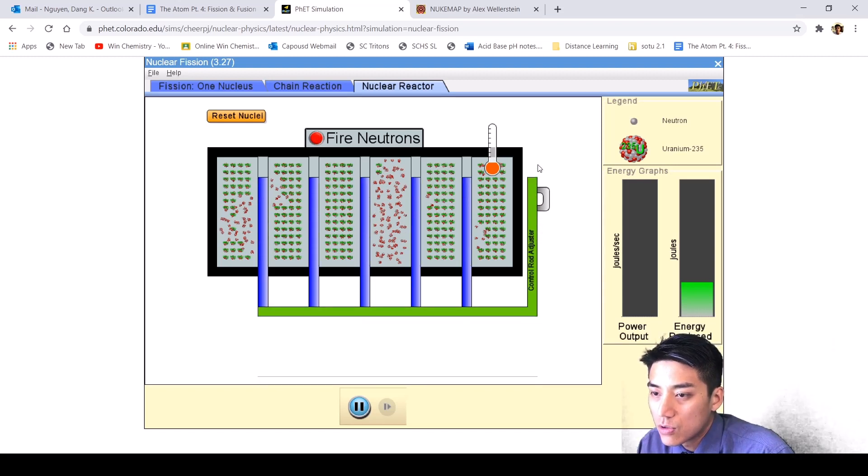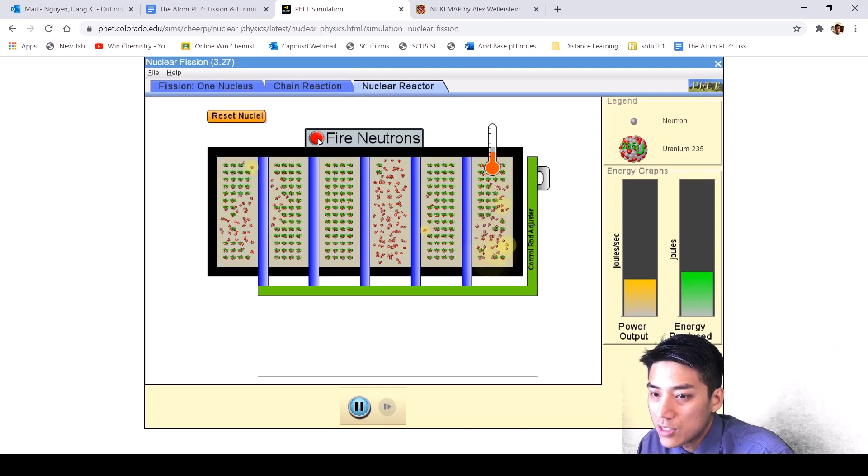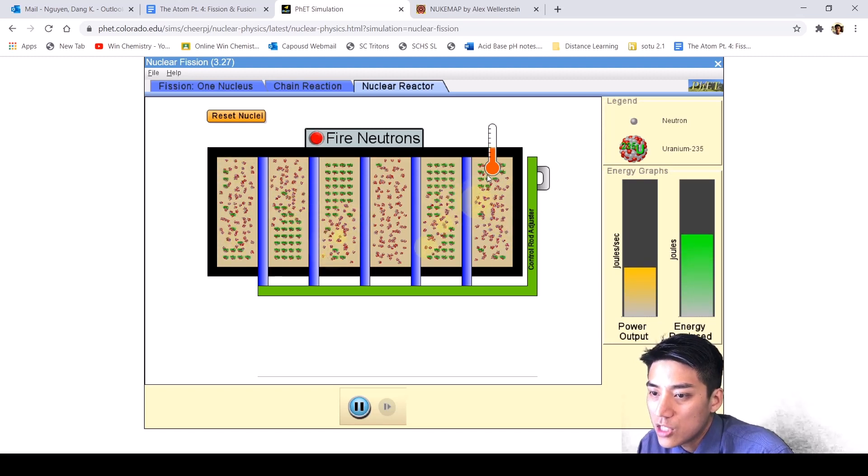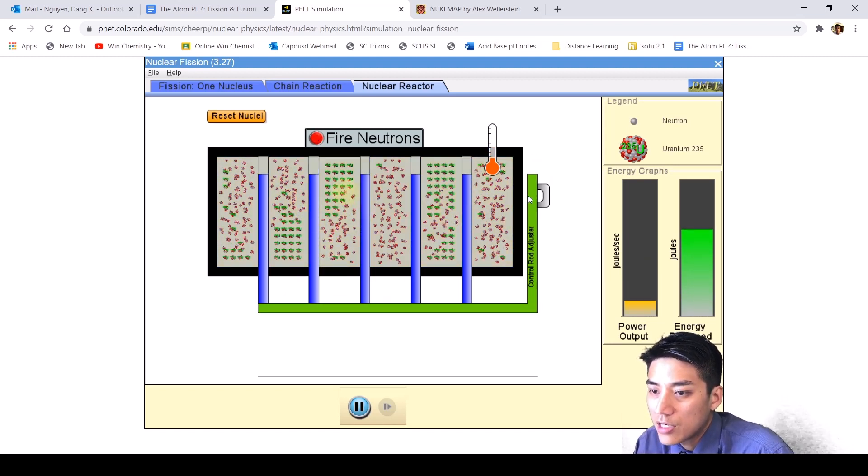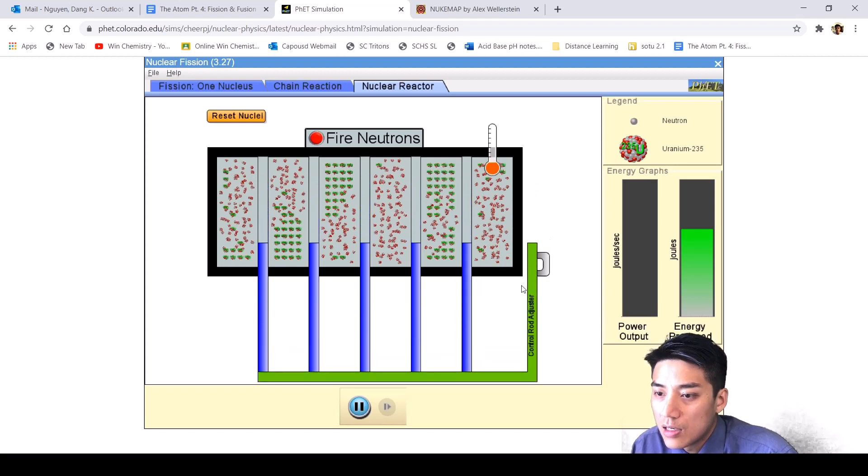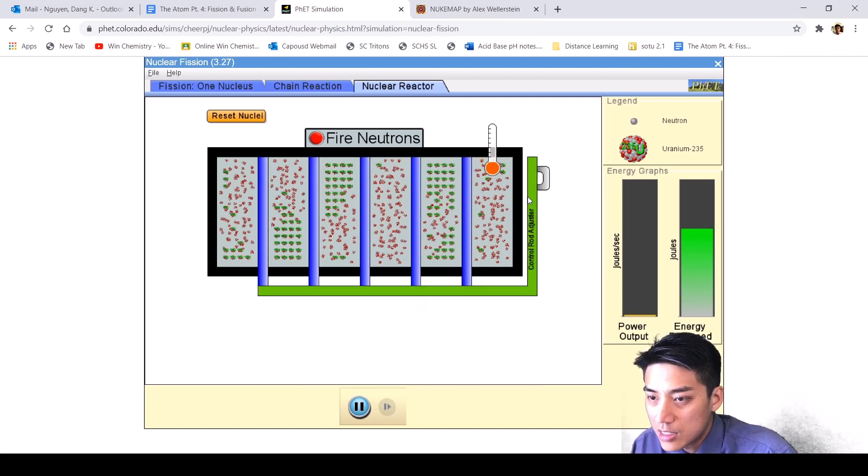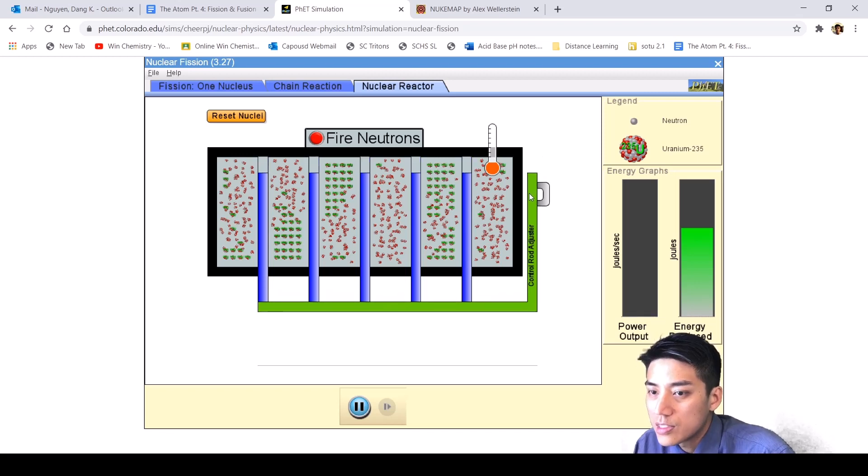Now if I have the control rods in all the way, I can't really produce the amount of energy that I want. I have to constantly fire neutrons, and there's no true chain reaction that's taking place. Again, it's a delicate balancing act of making sure your control rods are in the right place at the right time.